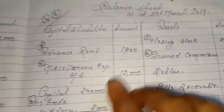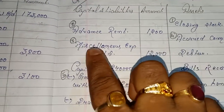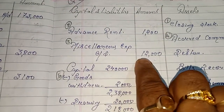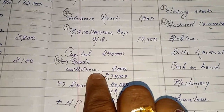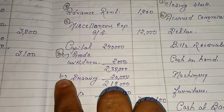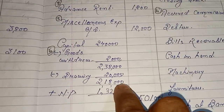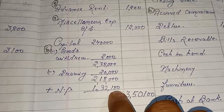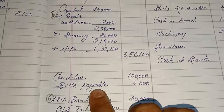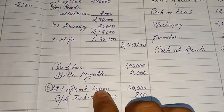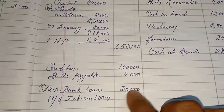Balance Sheet — Liability side: Advance rent 1,200, miscellaneous expenses outstanding 12,000. Capital 2,40,000 minus goods withdrawn 2,000 = 2,38,000, minus drawing from trial balance 20,000 = 2,18,000, plus net profit 1,32,100 = 3,50,100. Creditors 1,00,000, bills payable 2,000, 12% bank loan 30,000, outstanding interest on loan 800.